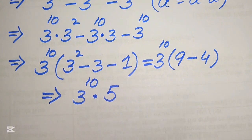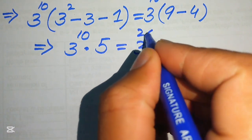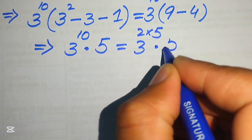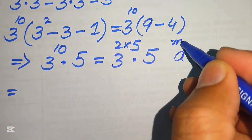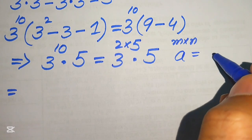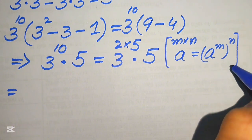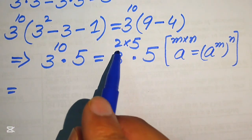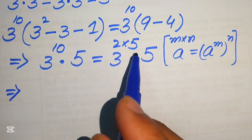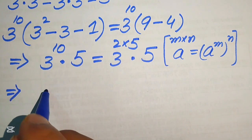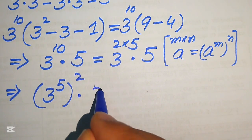We rewrite 3 to the power of 10 as 3 to the power of 2 multiplied by 5, and apply the exponent law: a to the power of m times n equals a to the power of m, to the power of n. This allows us to rewrite the expression as 3 to the power of 5, whole squared, multiplied by 5.